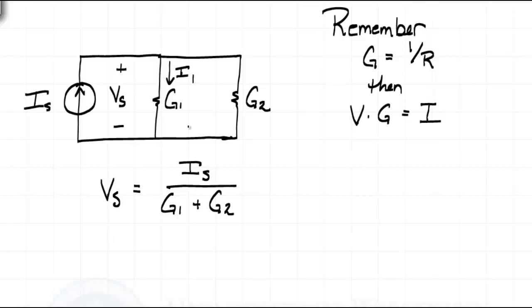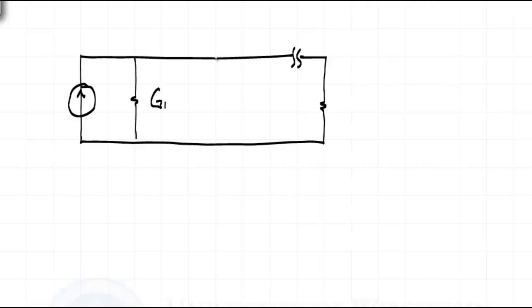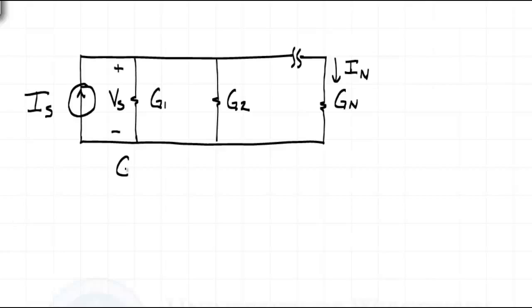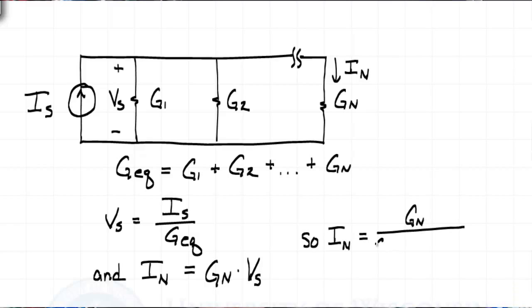If we wanted to know a particular current through a conductance, we could use Ohm's law to determine that current equals the conductance times the voltage. Combining these two equations, we have G1 divided by the quantity G1 plus G2, times the source current, equals the current through conductance G1. It's straightforward to extend this to any number of conductances in parallel. If we have N conductances in parallel all supplied by a current source Is, and we want to know the current through the Nth conductance, the voltage across it will be the source current divided by the equivalent conductance — the sum of all conductances. The current through the Nth conductance will be that conductance times the voltage, so the general solution is: the current through any particular conductance equals that conductance divided by the sum of all parallel conductances, times the current applied to the combination.